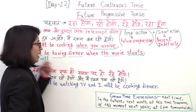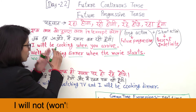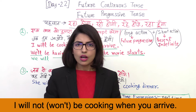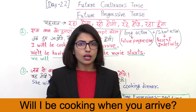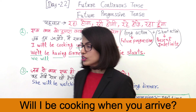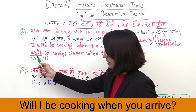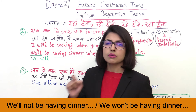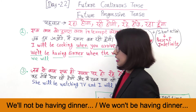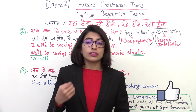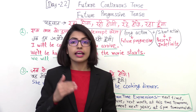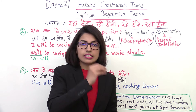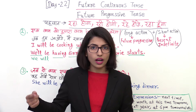Now let's make the negative: We will not be having dinner when the movie starts. You can make it interrogative by bringing 'will' to the front. This is how we use Future Continuous for the interrupting action scenario. Whether you give a specific time like '5 pm', or expressions like 'all week', 'this week', 'next week' — it is used the same way whenever another action will be happening.